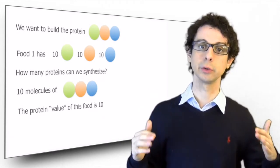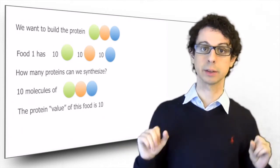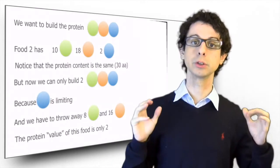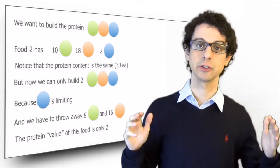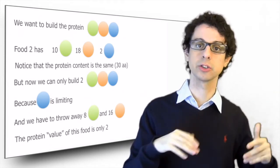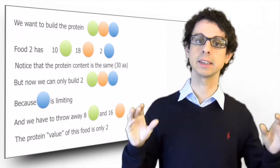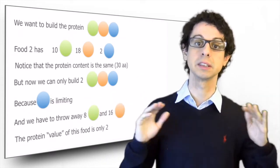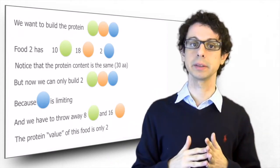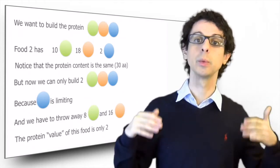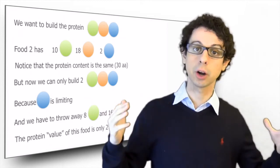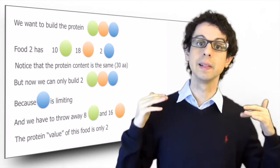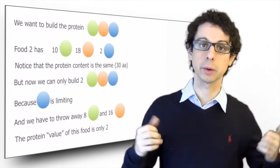This food is a high quality protein food because it has all the amino acids that we need in just the right proportions. We will be able to use all of them and make the protein that we need. But now imagine that we ate another food, food two. Now the proportions of the different amino acids have changed. This time we have 10 green amino acids, 18 orange, and two blue. Notice that the total protein content is the same as food one. We still have 30 total amino acids. So the grams of total protein in these two foods would be the same. But now how many copies of our protein can we build? Obviously we can only make two, because after that we will be out of the blue amino acid and we will not be able to build any more copies of the protein that we need. So we will build only two copies. We can say that the protein value of this food is only two, and that blue is the limiting amino acid. We don't have enough to keep going with our protein synthesis.